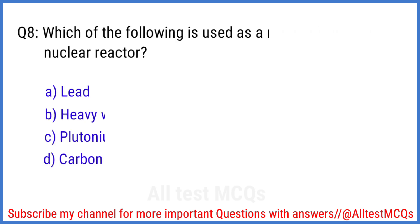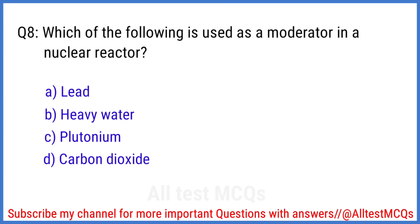Q8. Which of the following elements is used as a moderator in a nuclear reactor? The right answer is option B. Heavy water.